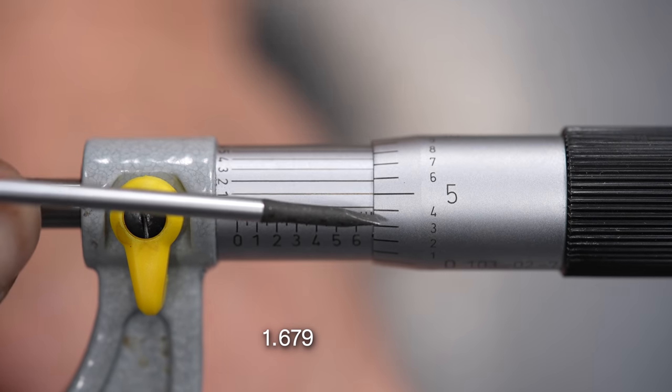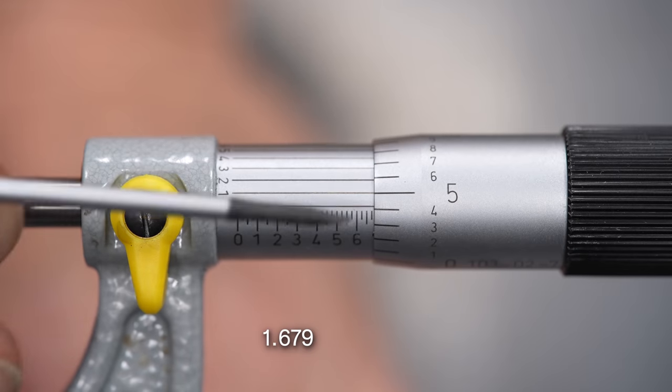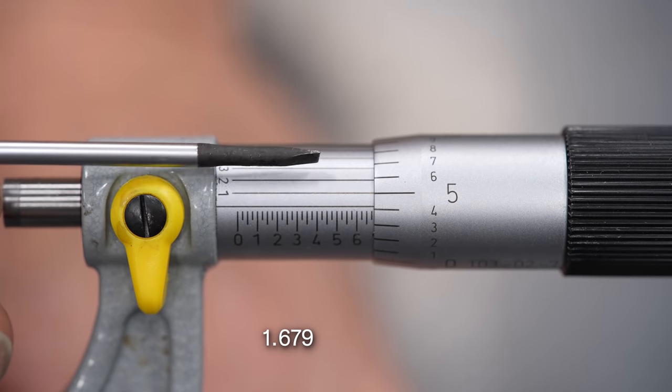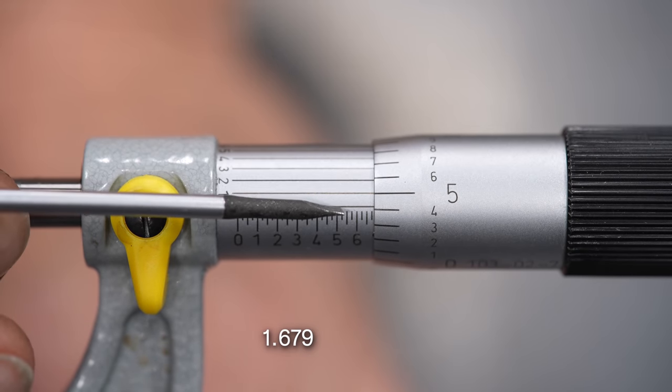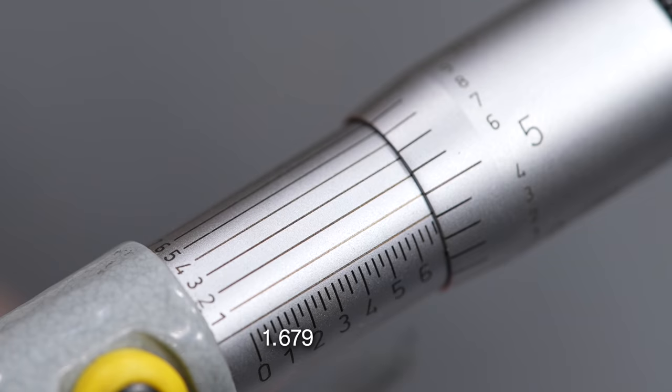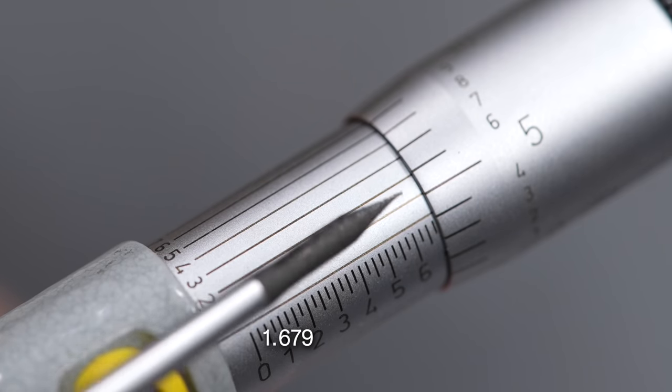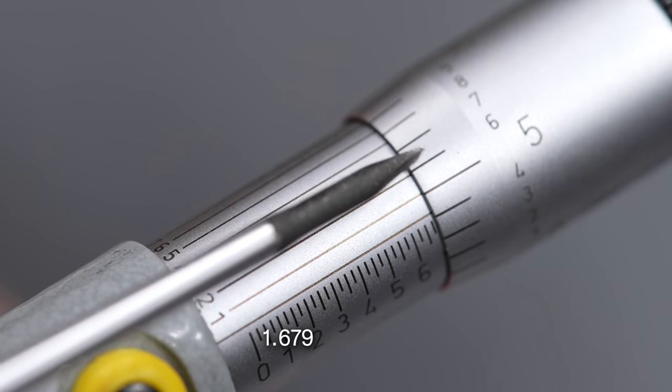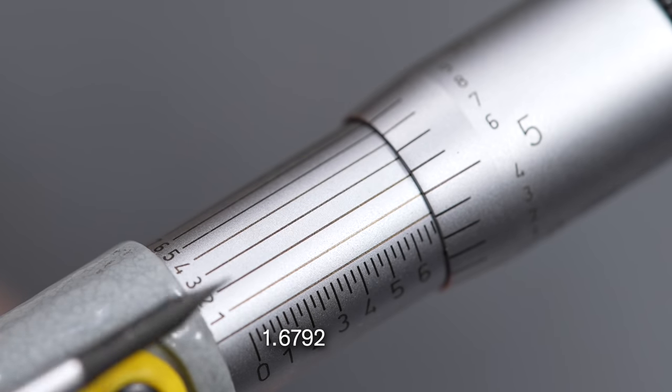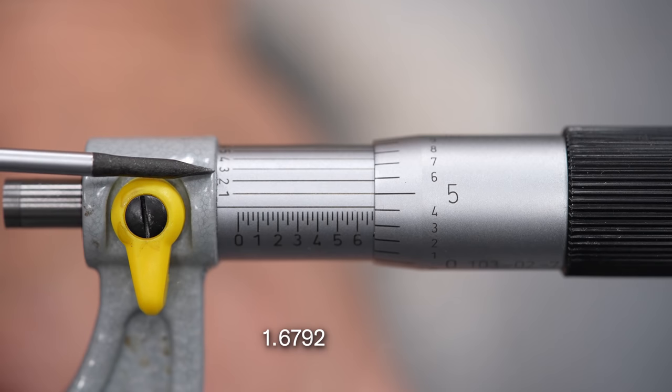Now to get your fourth decimal place, it's as simple as coming up this direction and catching the first line, set of lines that line up to each other, and in this case it's our second set of lines, and that is a two, so our fourth decimal place is a two.